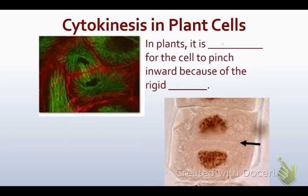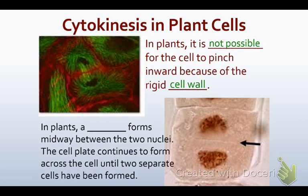In plant cells, it is not possible for the cell to pinch inward because of the rigid cell wall. Instead, a cell plate forms midway between the two nuclei and continues to form until the cell is two separate cells — it essentially builds a wall. So animal cells pinch in half, while plant cells divide themselves with a wall.